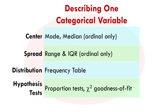We have descriptions of center, some of which apply only to ordinal categories, and spread, all of which apply only to ordinal categories. Then we look at frequency tables to figure out the distribution, or charts and bar graphs and mosaic plots. And we've just learned some hypothesis tests — proportion tests for one variable or two binary variables, and a chi-square goodness of fit test for a single categorical non-binary variable.